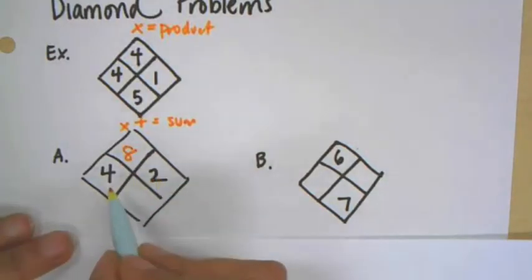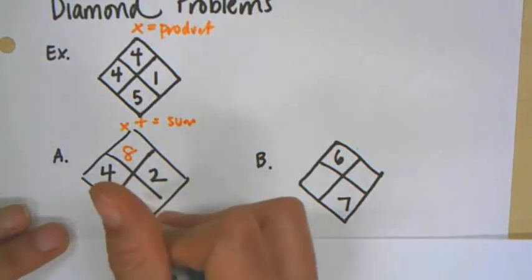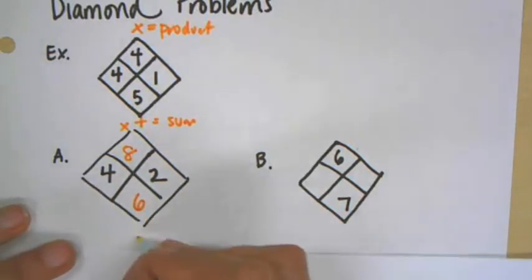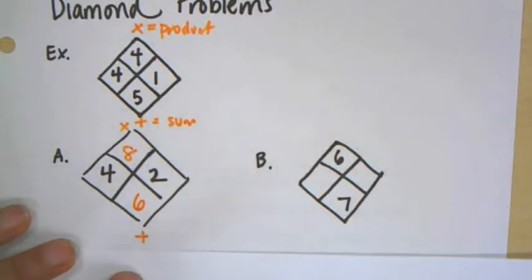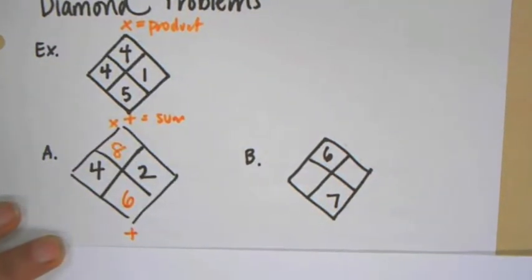And the sum of these two numbers, four plus two, is six. And for me, I like to actually put the operations on my diamond problem, so that it just helps keep things straight for me.